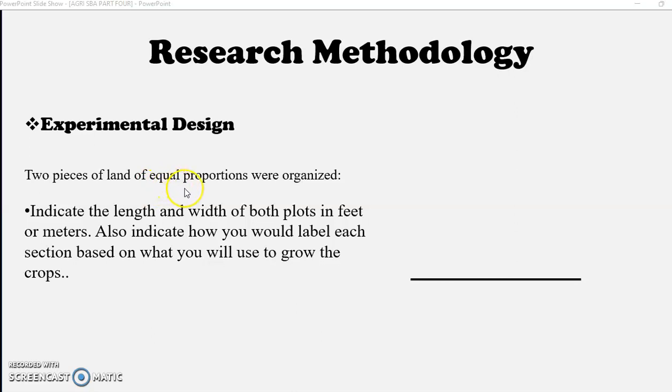Moving on to our methodology, under methodology you need a design. What sort of experimental design are you going to use? It's an experiment that you're carrying out, so for example you could say two pieces of land of equal proportions were organized, were cleaned, were lined out, were chosen. You can also indicate the length and width of both plots in feet or meters.